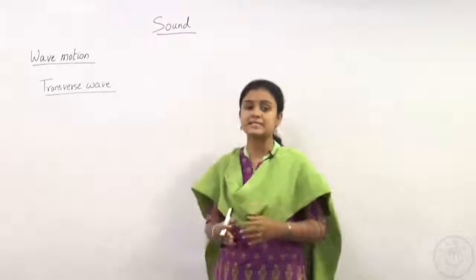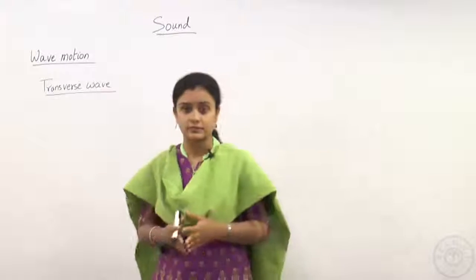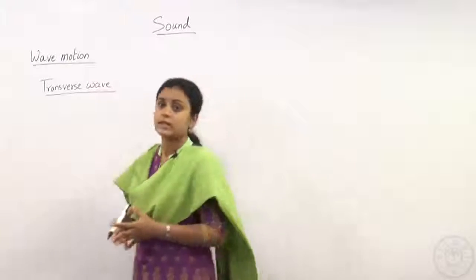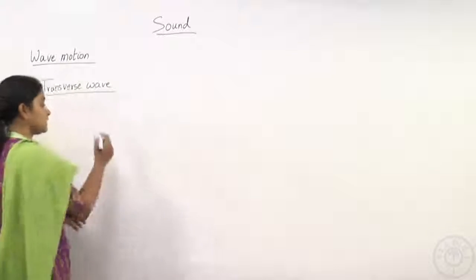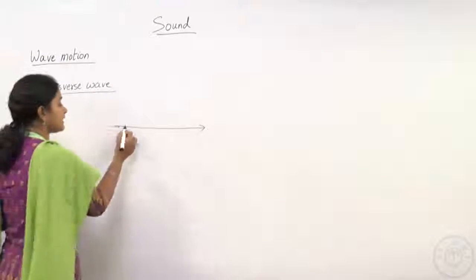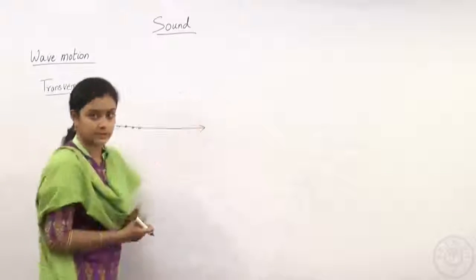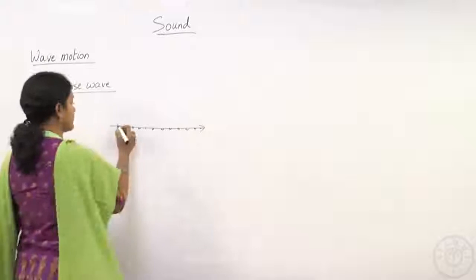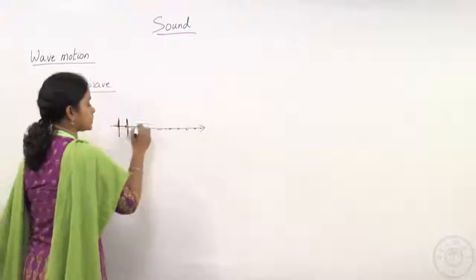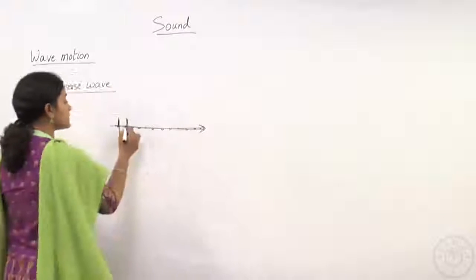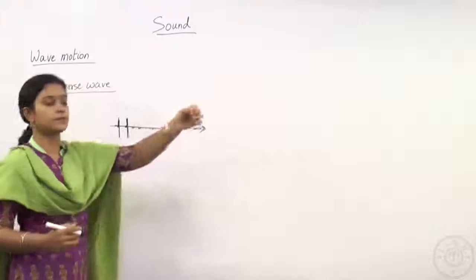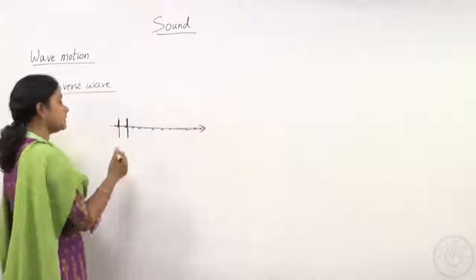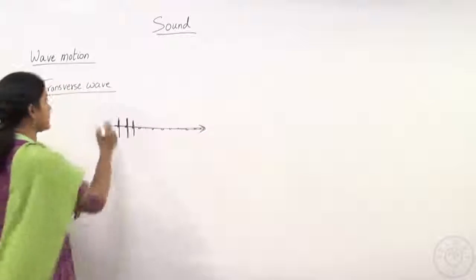To understand wave motion, let us first understand its categories. We have basically two types: transverse wave and longitudinal wave. A wave is called a transverse wave when the particles in the medium move perpendicular to the direction of propagation of the wave. If the disturbance propagates in one direction but the particles move perpendicular to it, then we say the wave is propagating as a transverse wave.